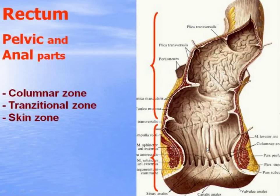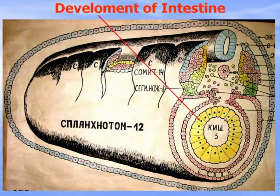The stomach and intestine epithelium and glands develop from the endoderm of the primary digestive tube of the embryo, and connective tissue and muscle tissue develop from the surrounding mesenchyme — embryonic connective tissue.